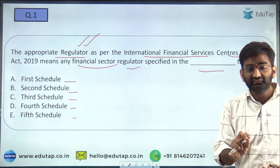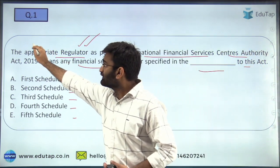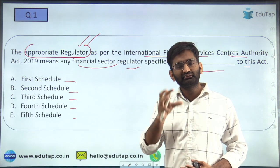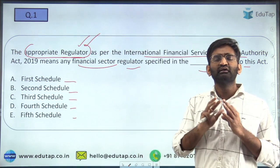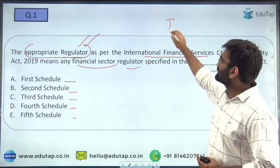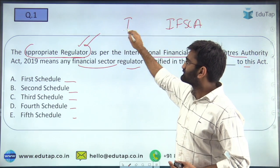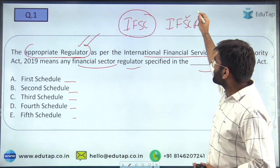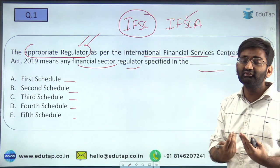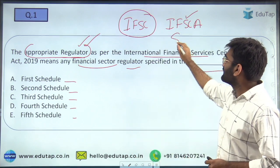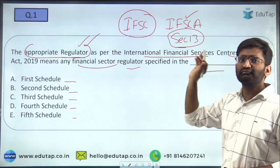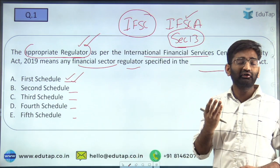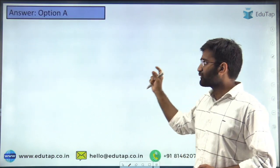The First Schedule provides the list of appropriate regulators. As discussed in the previous session, there are four regulators which are part of this schedule — these are the regulators whose functions will be taken up by IFSCA as far as IFSCs are concerned. Only within these zones will IFSCA take up the functions of these four regulators, as per this specific Act. Section 13 of the Act provides this specific power to IFSCA. The correct answer is Option A — the First Schedule, which consists of four regulators.